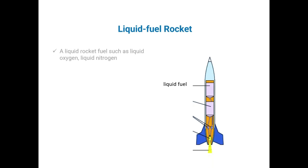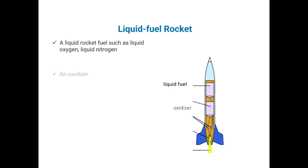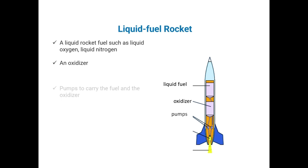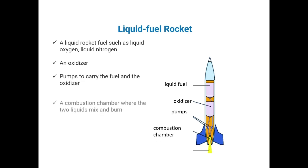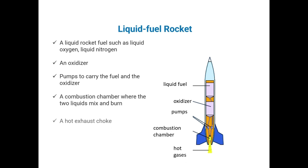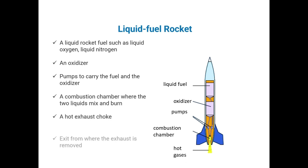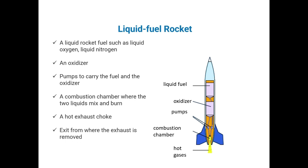The picture before you describes the components of the liquid fuel rocket. A liquid fuel rocket contains liquid fuel such as liquid oxygen and liquid nitrogen, an oxidizer, pumps to carry the fuel and the oxidizer, a combustion chamber where the two liquids mix and burn, a hot exhaust choke, and an exit from where the exhaust is removed.